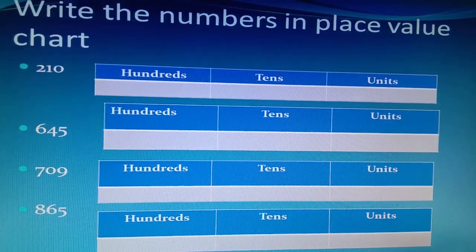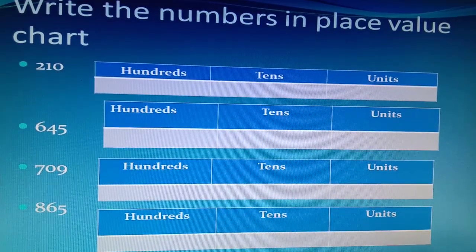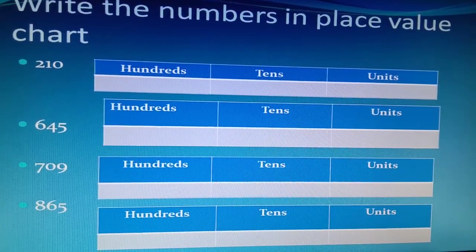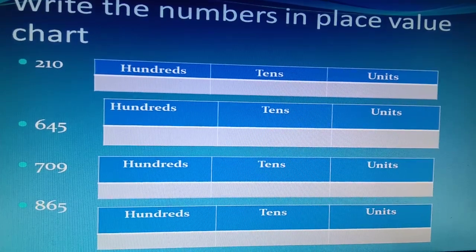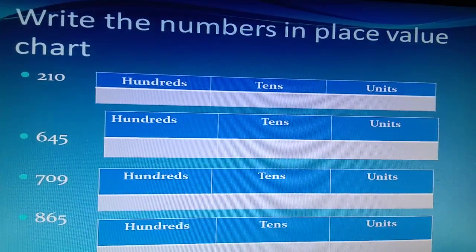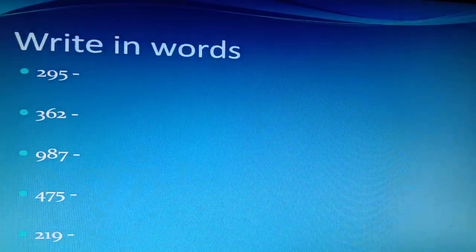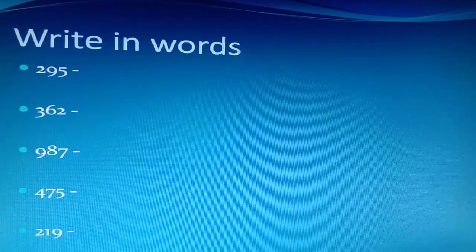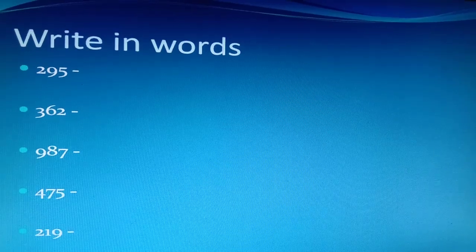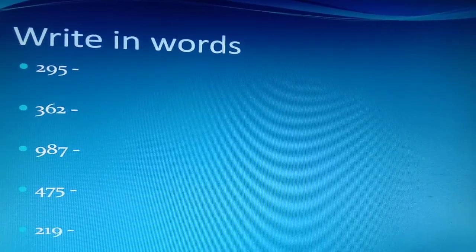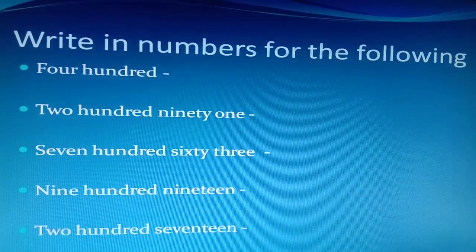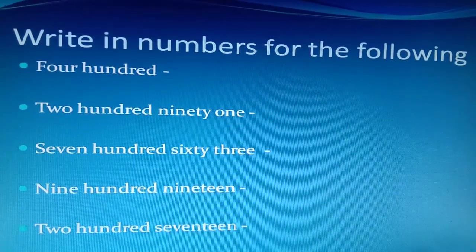Write the numbers in the place value chart. A table is provided with columns for hundreds, tens, and units — you have to fill in the numbers according to the place values. Also complete: write in words, and write in numbers for the following.